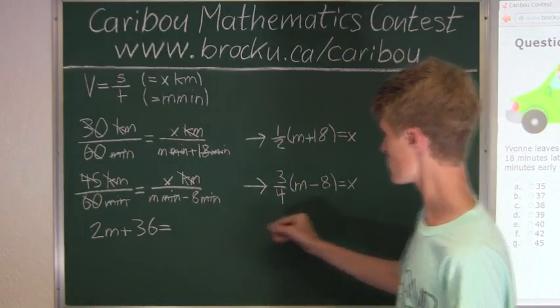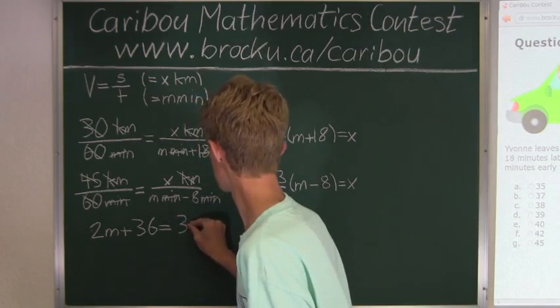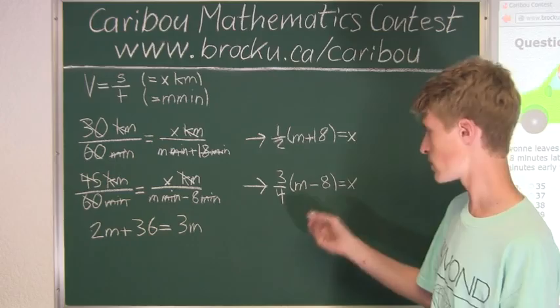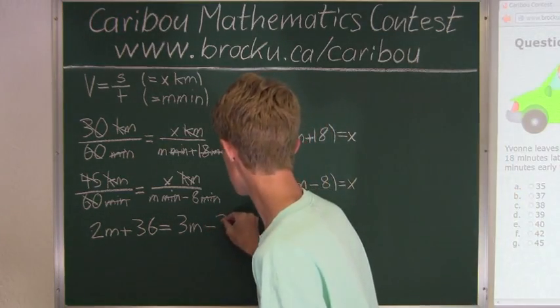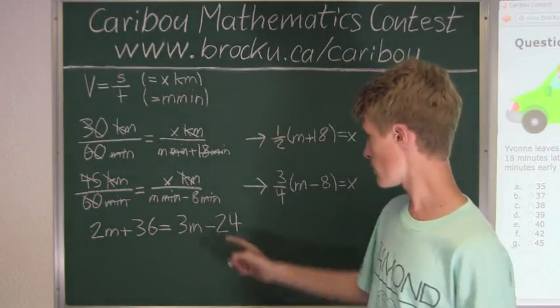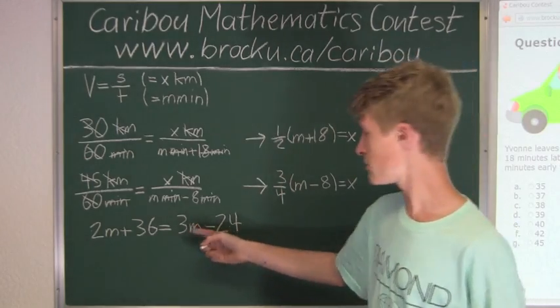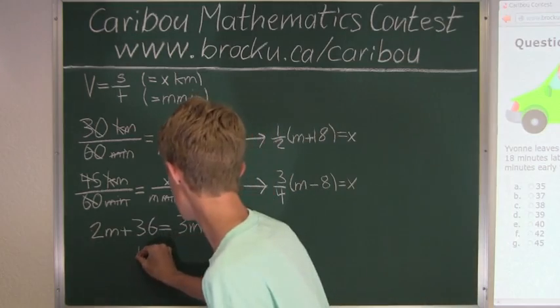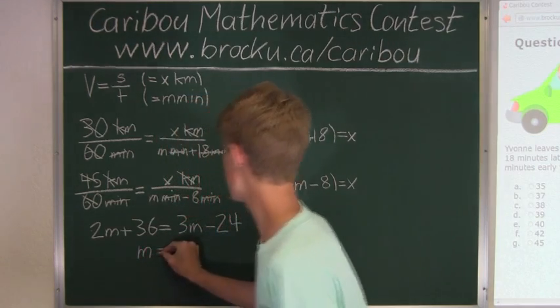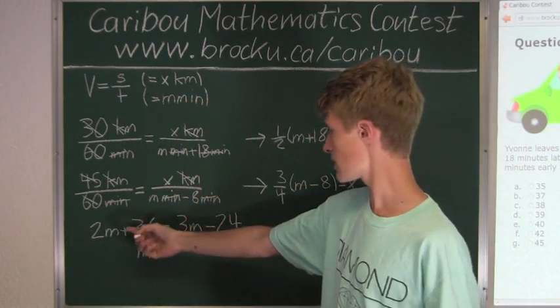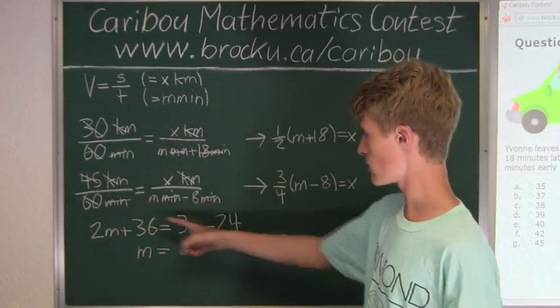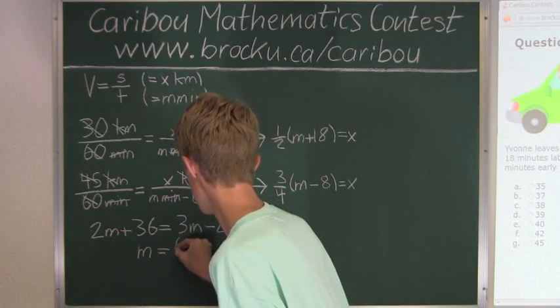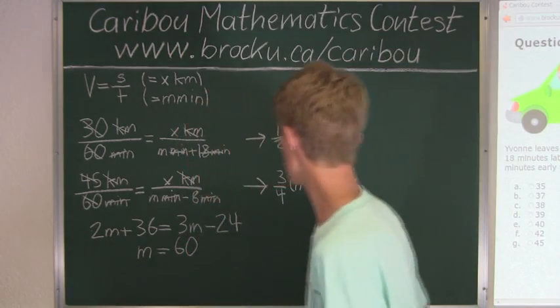And then we have 3 times minus 8, which is minus 24. So if we keep the N's on this side, 3N minus 2N is N. So now I will just write it on this side. And if we have just the numbers on this side, 36, then plus 24 is 60. So we have N is equal to 60.